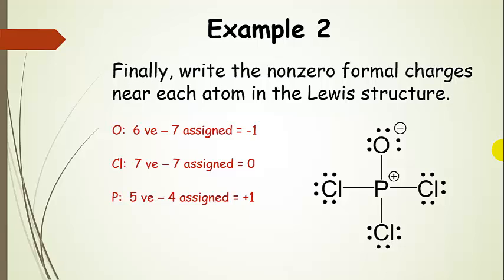Now we add those formal charges to the structure. Oxygen ended up with a formal charge of minus one, so we add that to the structure — you'll often see a circle around it but that's not required. Phosphorus has a formal charge of plus one, so we add that too. A Lewis structure is not complete without the formal charges added.